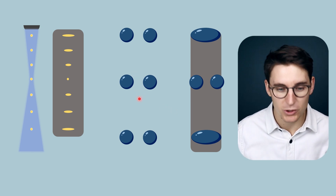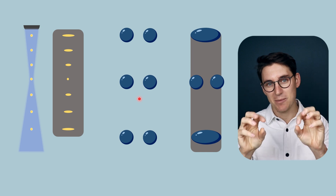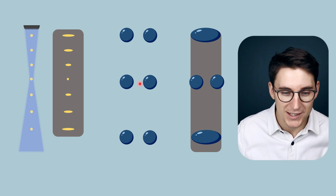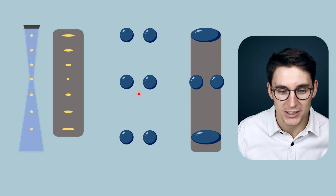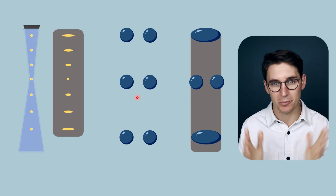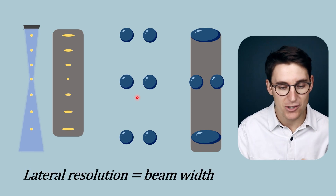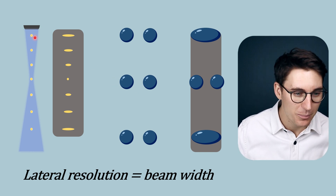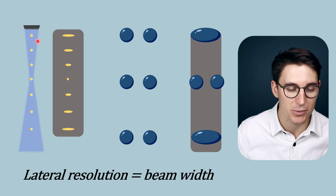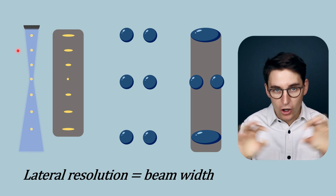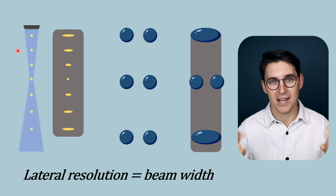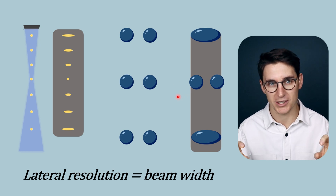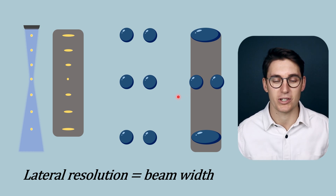For the beam to resolve two objects at the same depth but in different lateral positions, the distance between those two objects must be greater than the ultrasound beam width itself. So lateral resolution is equal to the beam width. Whatever the beam width is at a certain depth, the two objects need to be further apart than that beam width in order to be registered as two discrete objects.